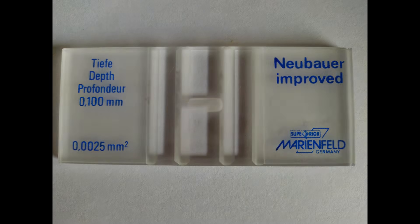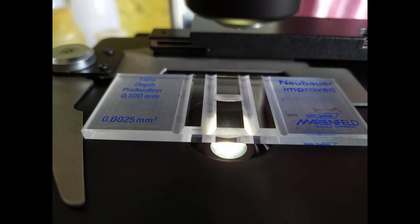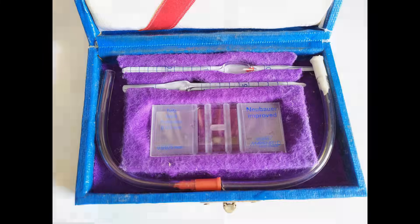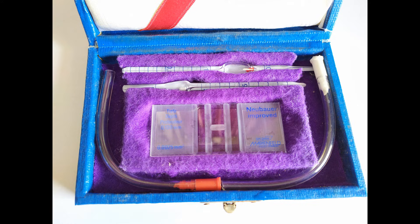The most commonly used hemocytometer is the one with the improved Neubauer counting chamber. Even though the hemocytometer can be used to count most types of cells, it was originally designed for counting blood cells, and therefore commercially sold units usually come with a pair of special pipettes called the WBC pipette and the RBC pipette.